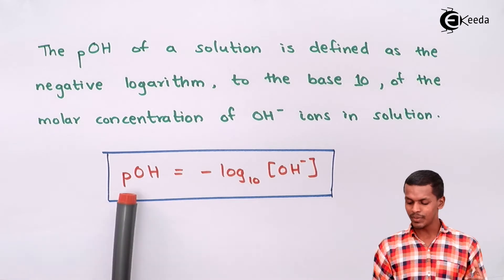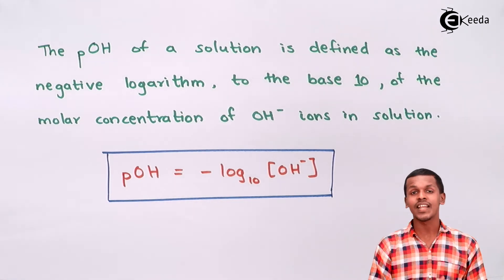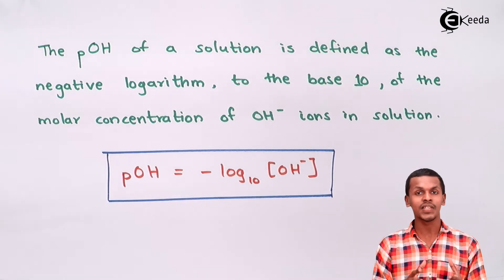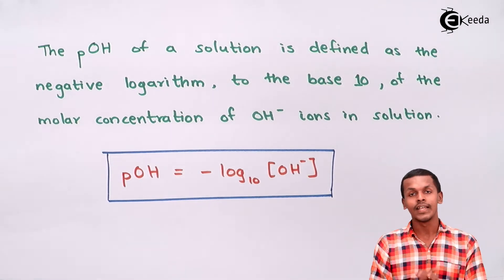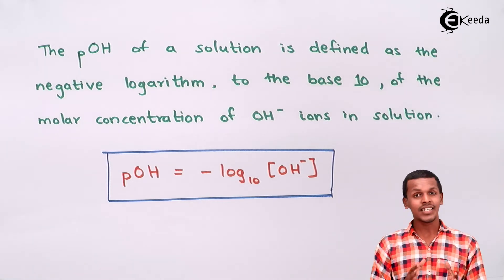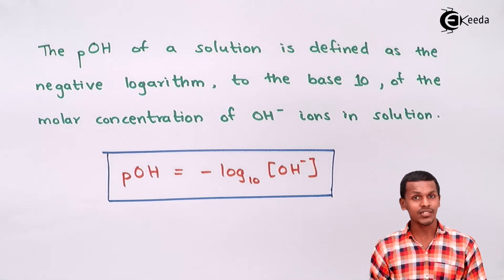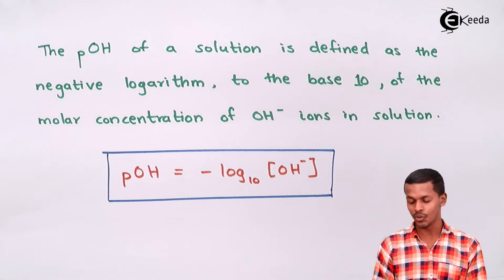But what does the 'p' stand for in pH and pOH? The 'p' stands for potence. Potence means it declares the strength of that particular acid or base. If we compare pH and pOH there is a relation between them, which we are going to describe in our next lecture.